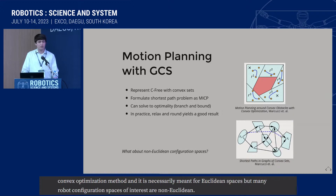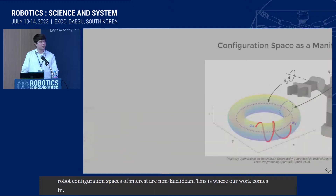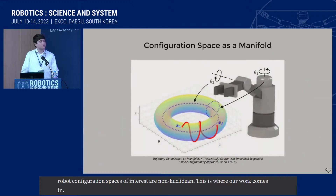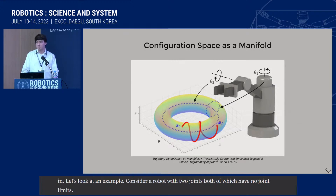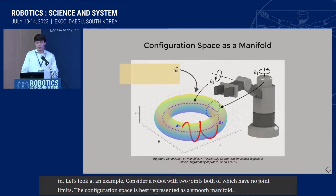Let's look at an example. Consider a robot with two revolute joints, both of which have no joint limits. The configuration space of this robot is best represented as a smooth manifold, specifically a torus. Calling this configuration space Q, we turn our attention to its collision-free subset, m-bar.